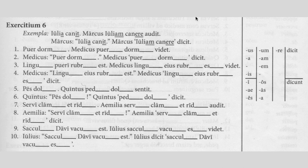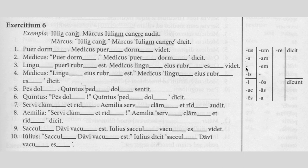This is exercise six, similar to something you did recently — a fairly simple idea. The example is: Julia sings, Marcus hears Julia sing. As explained before, this is done with an infinitive. Literally in English it sounds like 'Marcus hears Julia to sing,' but don't worry about how it sounds in English — just focus on the way it's done in Latin.